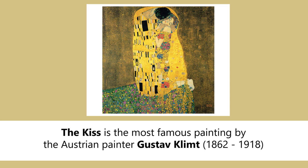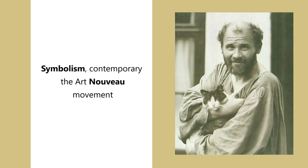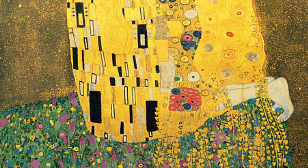The Kiss is the most famous painting by the Austrian painter Gustav Klimt, 1862 through 1918, made in the so-called Golden Age of his professional career, which lasted from 1898 to 1908. This artist, belonging to the current of symbolism, contemporary to the Art Nouveau movement, painted The Kiss as an oil and gold leaf on canvas piece that used fresco and mosaic techniques as well.